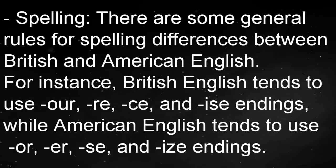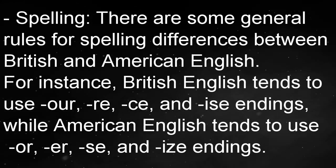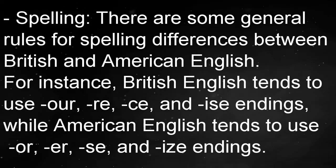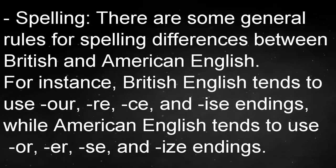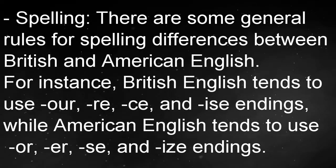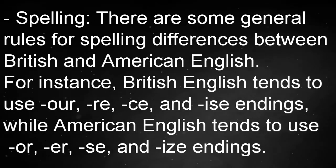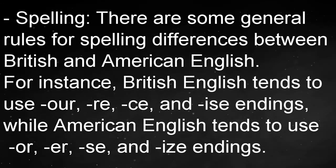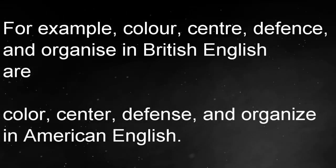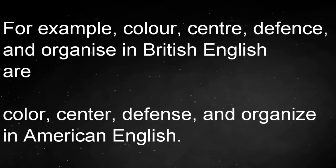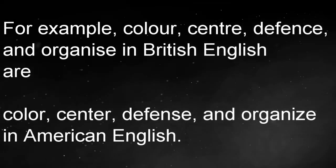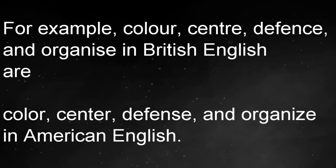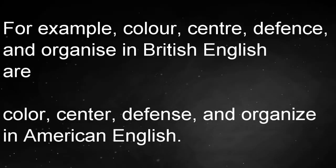Spelling: there are some general rules for spelling differences between British and American English. British English tends to use -our, -re, -s, and -ise endings, while American English tends to use -or, -er, -z, and -ize endings. For example, colour, centre, defence, and organise in British English are color, center, defense, and organize in American English.